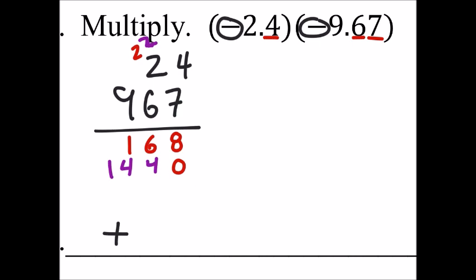And now the hundredths position. Nine times four is thirty-six. Nine times two is eighteen. Plus the three is twenty-one. So we get an eight.